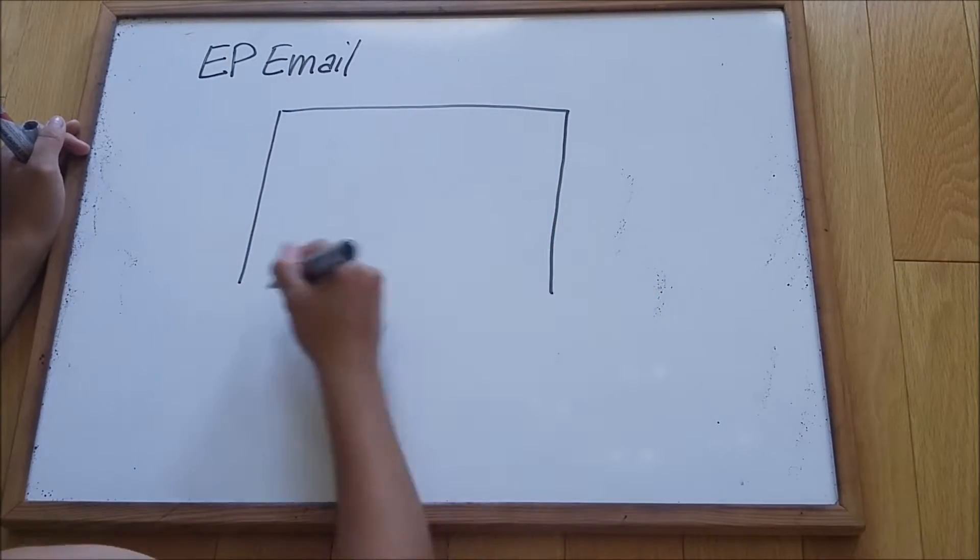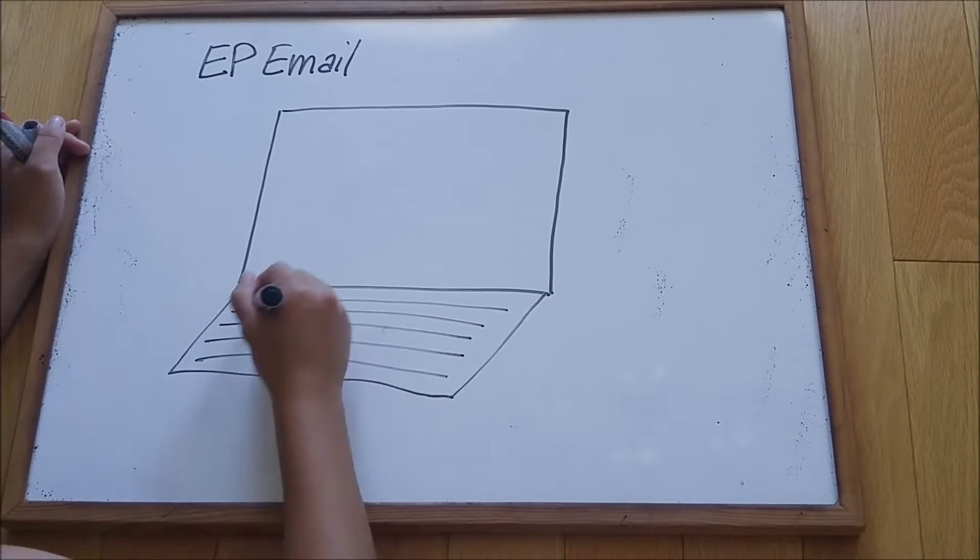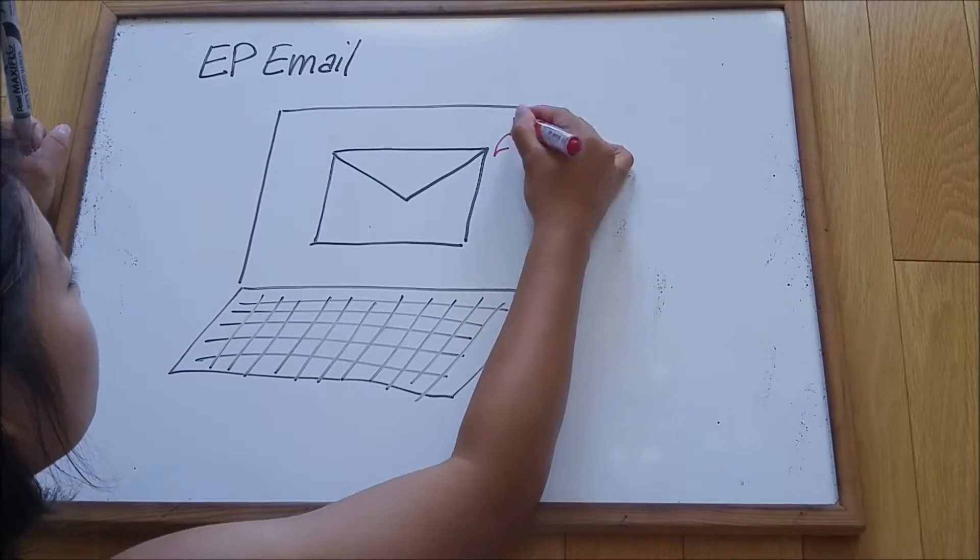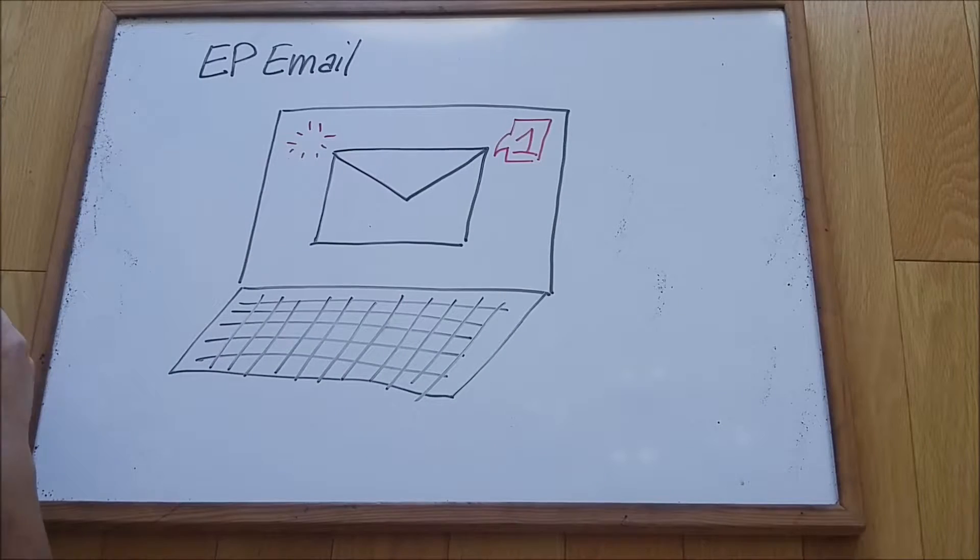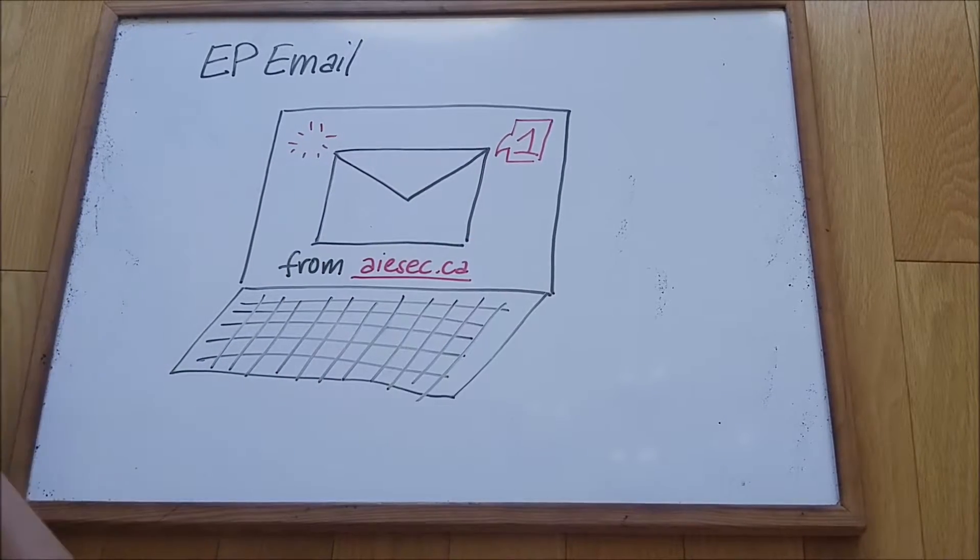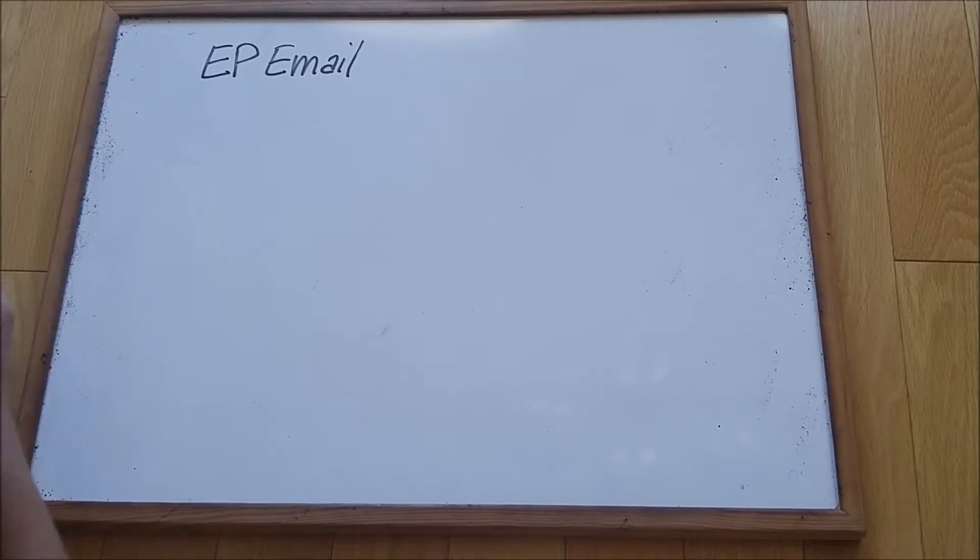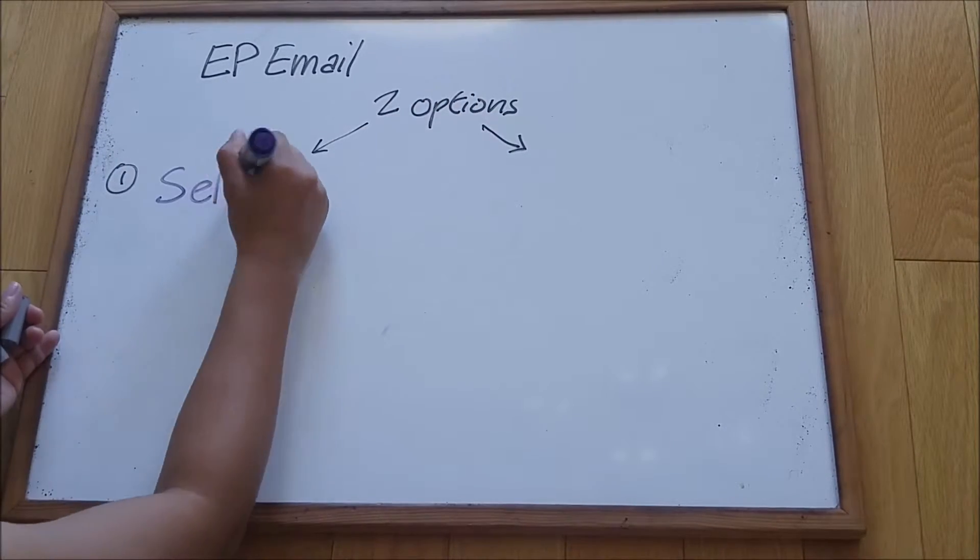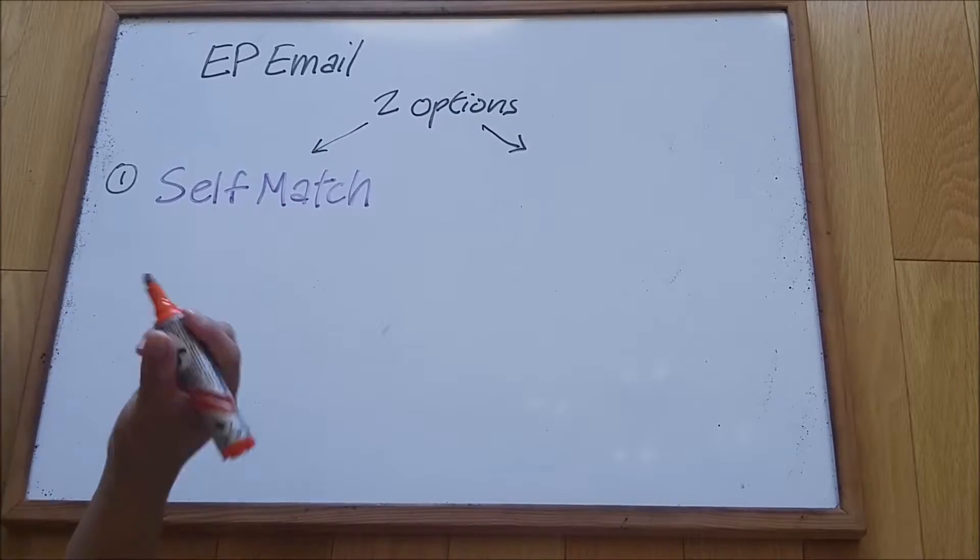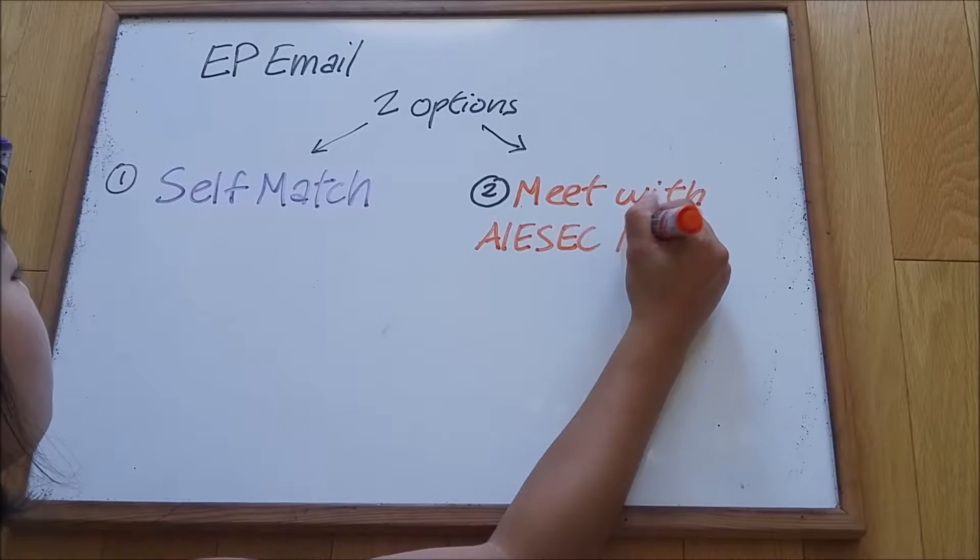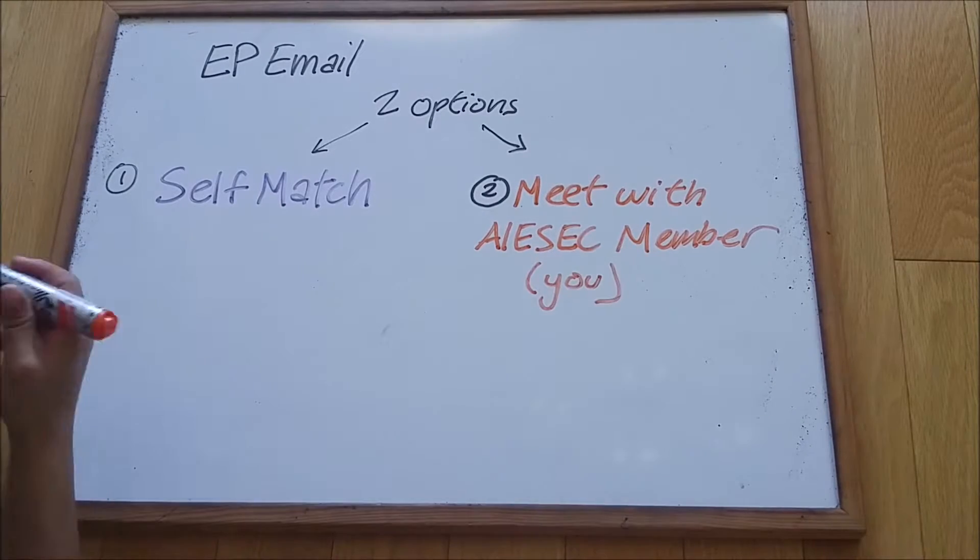What happens after that is your lead will get an email, an automated email from aiesec.ca. It goes to whichever email they provided to you in the form, and that prompts them to two options.